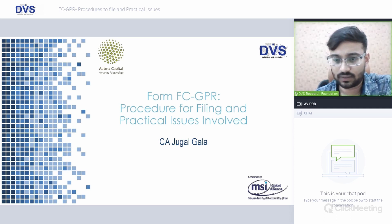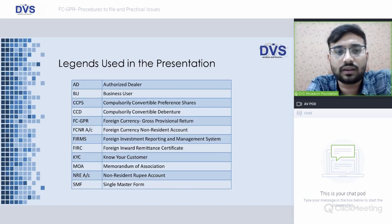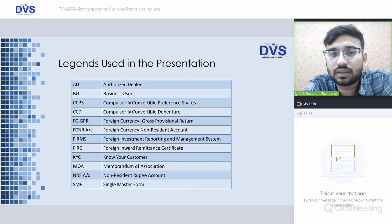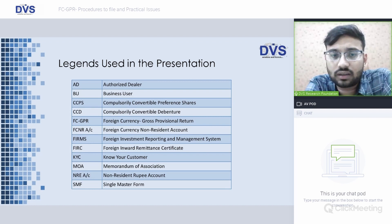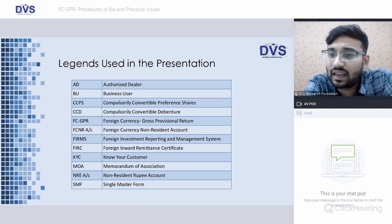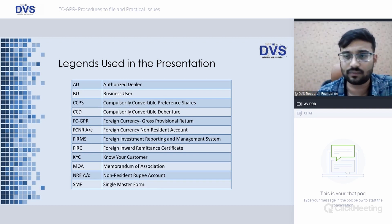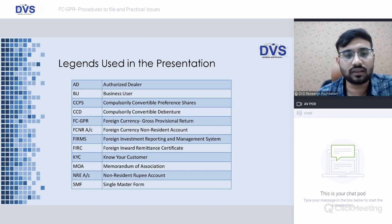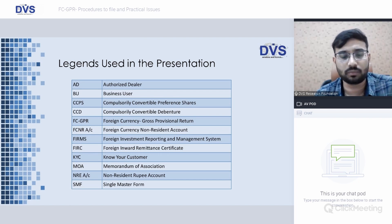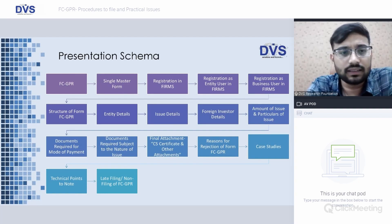Before we get started, I'd like to acknowledge the effort of Subash for preparing this PPT. The legends used: AD refers to Authorized Dealer; BU — Business User; CCPs — Compulsory Convertible Preferences; CCD — Compulsory Convertible Debentures; FC-GPR — Foreign Currency Gross Provisional Return; FCNR — Foreign Currency Non-Resident Account; FIRMS — Foreign Investment Reporting and Management System, the centralized system RBI has started for filing various forms required under FEMA; FIRC — Foreign Inward Remittance Certificate; KYC — Know Your Customer; MOA — Memorandum of Association; NRE account — Non-Resident Rupee Account; SMF — Single Master Form.